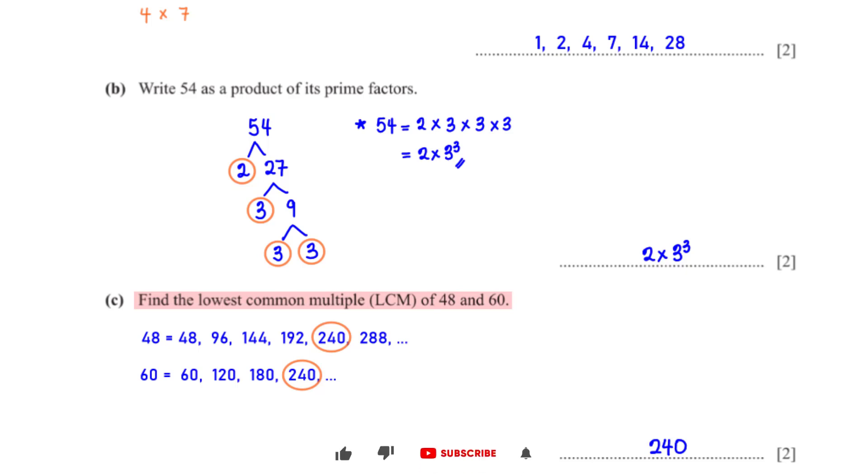Find the lowest common multiple of 48 and 60. First, we need to list the multiples of 48 and 60. From these lists, we see that the lowest common multiple of the two numbers is 240.